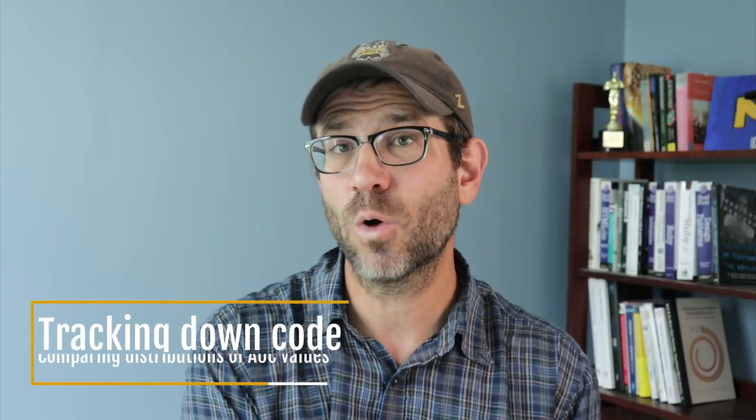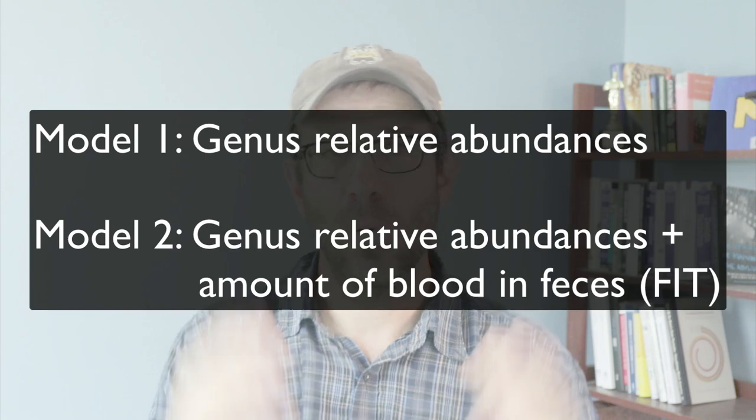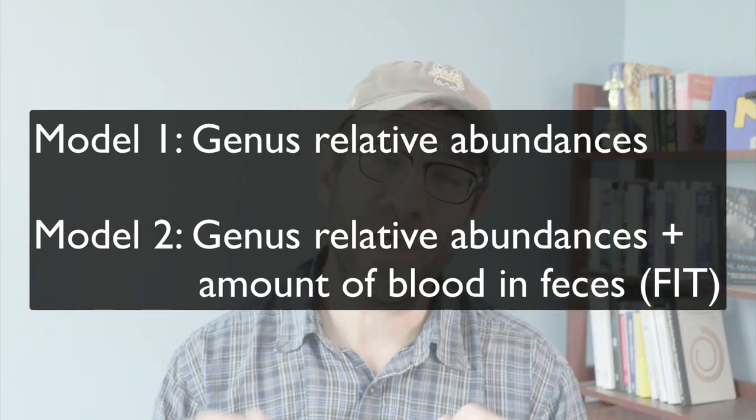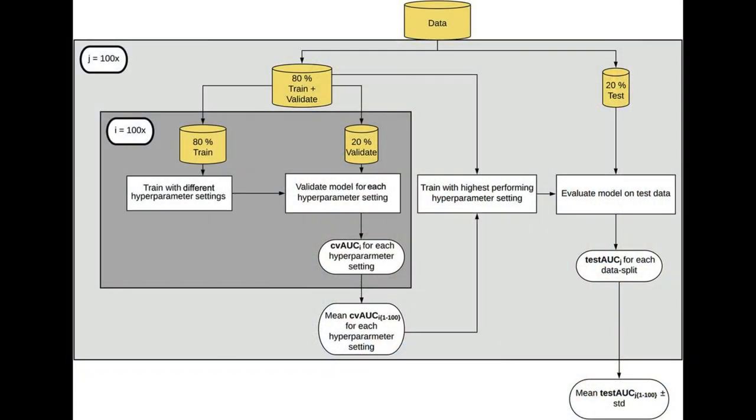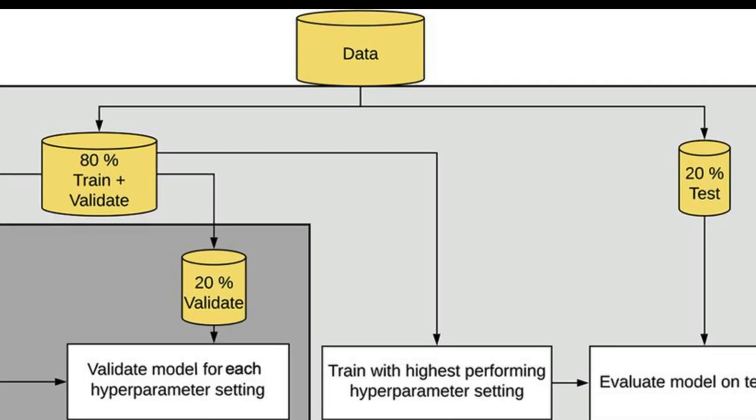That is the topic of today's episode of Code Club. What are the strategies that you and I can use to better understand the code we find out there in the wild and want to appropriate for our own analyses? In the past week, I've been doing more work on this project we've been working on in recent episodes. We've been developing an L2 regularized logistic regression model using the relative abundances of microbial populations in a person's stool sample to predict whether or not they have a screen-relevant neoplasia — think SRN or colon cancer.